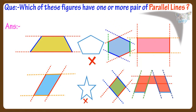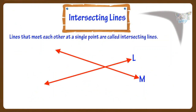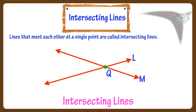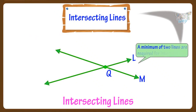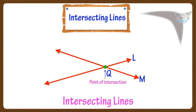Now let's learn what are intersecting lines. Lines that meet each other at a single point are called intersecting lines. A minimum of two lines are required for intersection. The point where two lines meet is called the point of intersection. The lines L and M meet at point Q, so Q is the point of intersection, and lines L and M are intersecting lines.